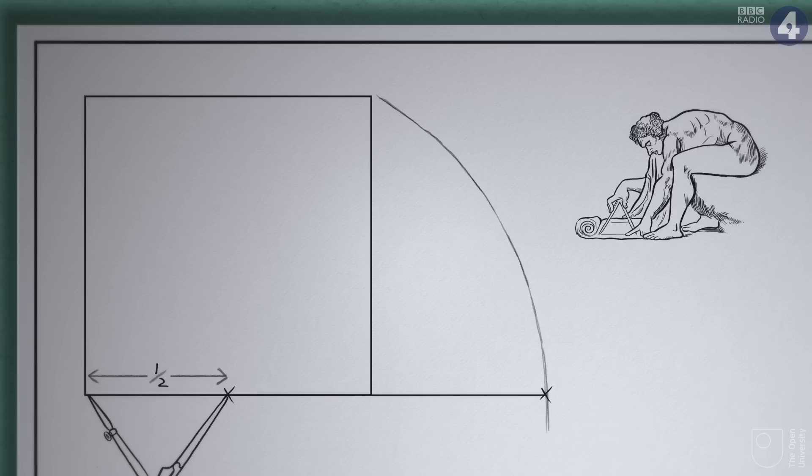Mark the point where the circle crosses the extension of the bottom part of that square. Draw a perpendicular line up from that. Got it? Now join everything up.